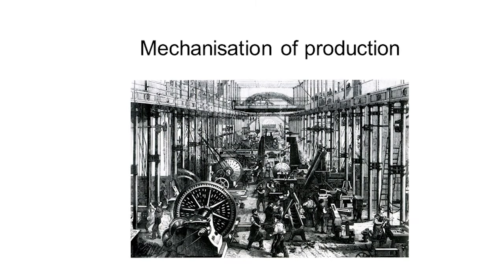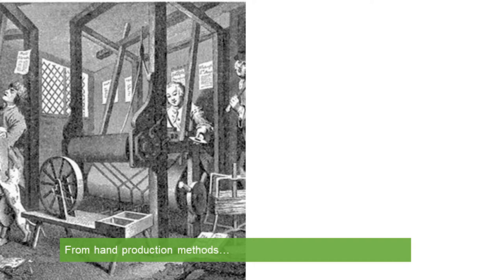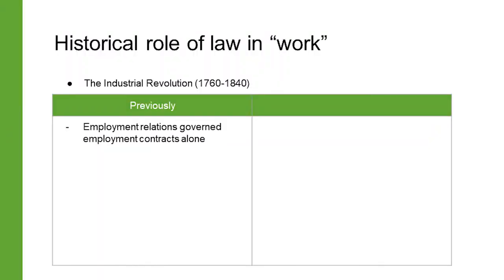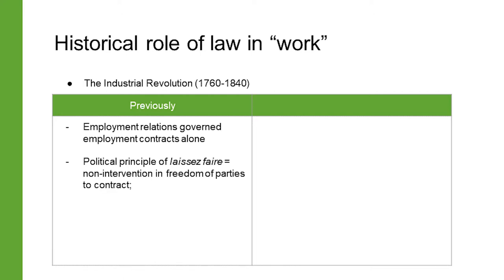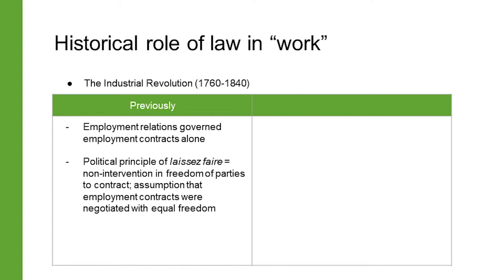When production shifted from small-scale production studios to large-scale factories, it also transformed our relationship with work. For many years, employment relationships were governed only by the contract between the employer and the employee, which meant that the state would not intervene. The free will of the parties to enter into contracts was dominant — the theory being that the employer and the employee decided freely whether or not to conclude a contract, the terms of that contract, and also when to terminate it.